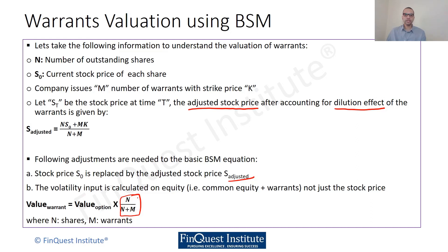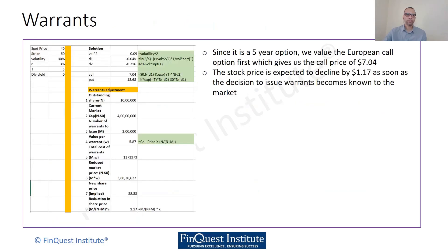To see these formulas in action, let's go through a simple numerical. The things on the left-hand side of the yellow bar are given to us: stock price, strike price, volatility, interest rates, time to maturity, and dividend yield. For convenience we have just taken dividend yield as zero.